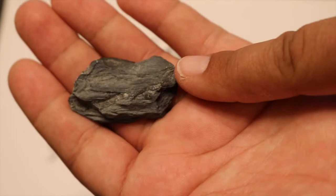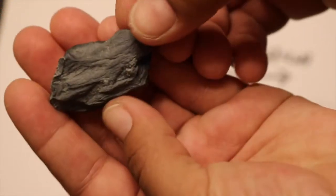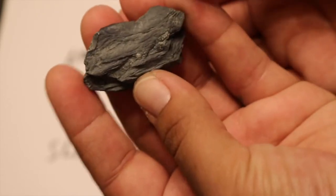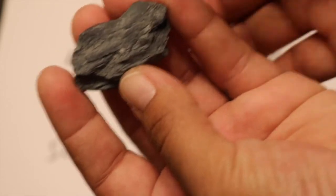Slate, because it is a low grade metamorphic rock, you can't really make out any of the minerals, so it has much smaller crystals because it forms at lower temperatures and lower pressures.